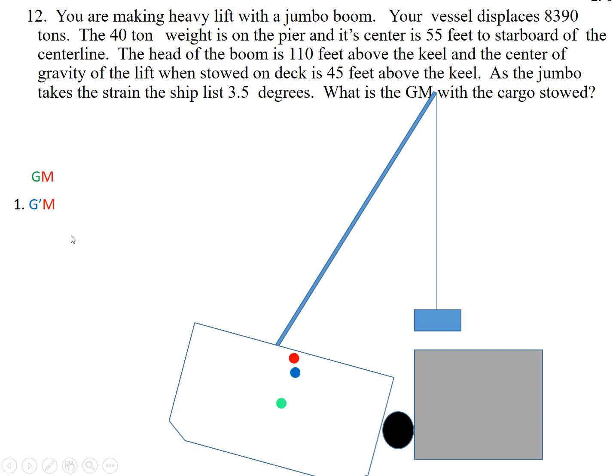And it turns out we can calculate this GM based on the information given in the problem. And so this new G, this G prime M, is equal to the weight of this weight, the distance from the center line that that weight is, the total displacement of the vessel, and then multiplied by the tangent of the angle. So we've been given the angle of list. We know that the weight is 55 feet off the center line. We know our displacement before. We know our weight here. We know that this is 110 feet. So we actually have all the data.